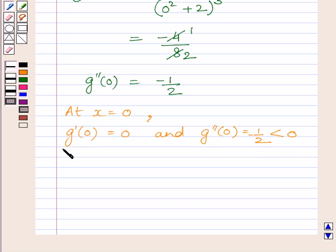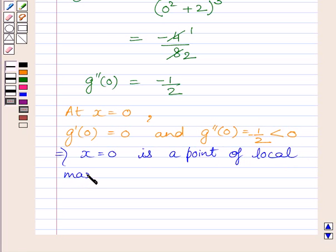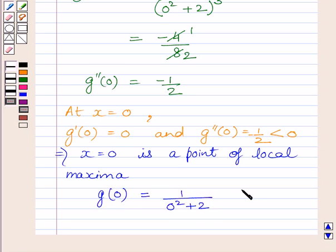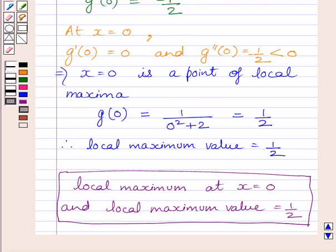Since g''(0) = −1/2, which is less than 0, this implies x = 0 is a point of local maxima. The local maximum value is g(0) = 1 / (0 + 2) = 1/2. So x = 0 is a point of local maxima and the local maximum value is 1/2.